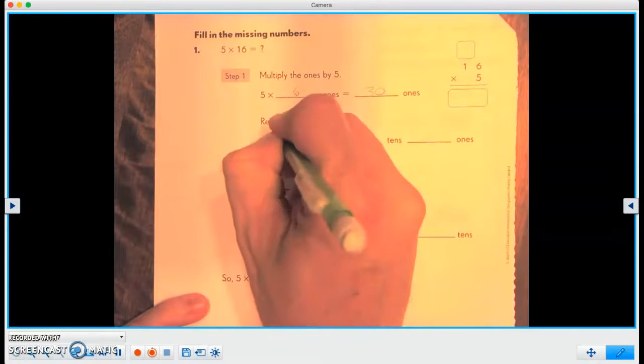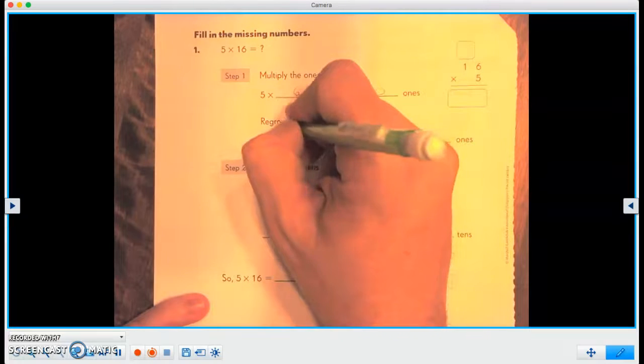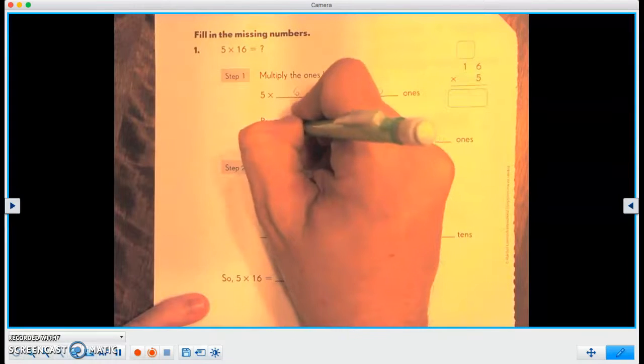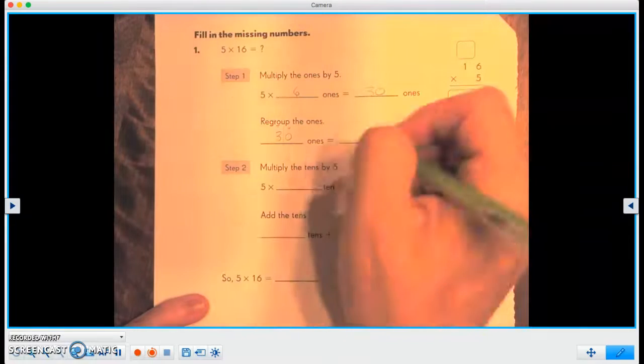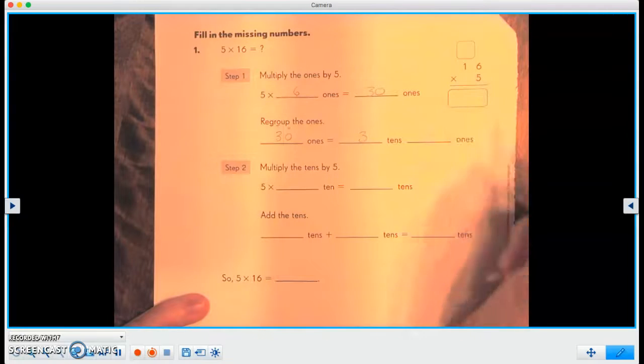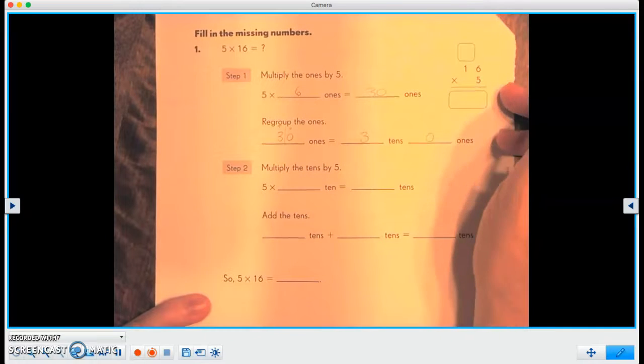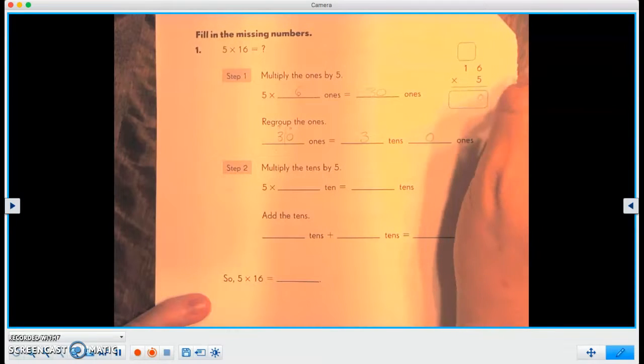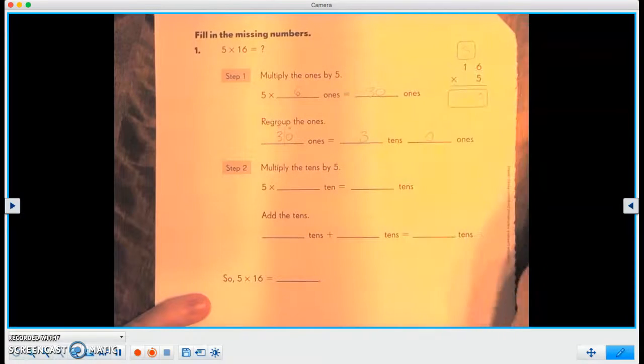Now we're going to regroup those 30 ones. And if you remember, we have tens and ones there. So we have three tens. And we have zero ones. And we're going to write that down over here by saying zero, and there's a three.